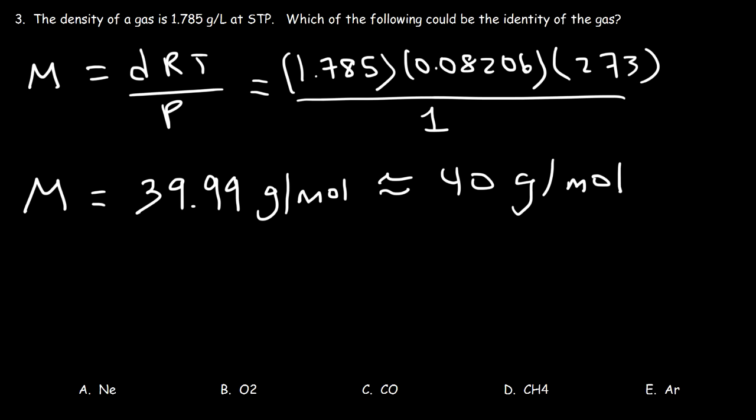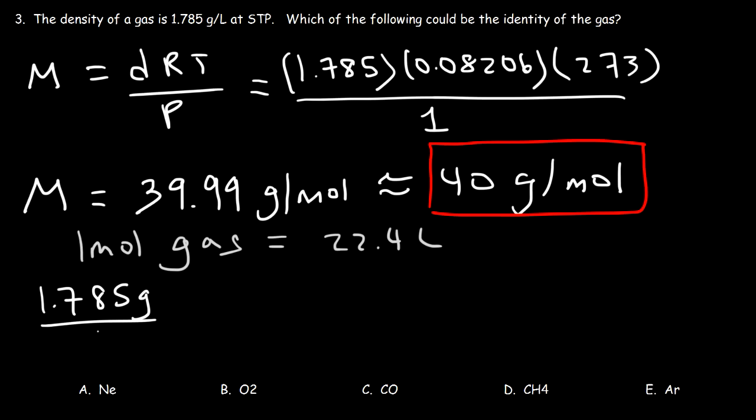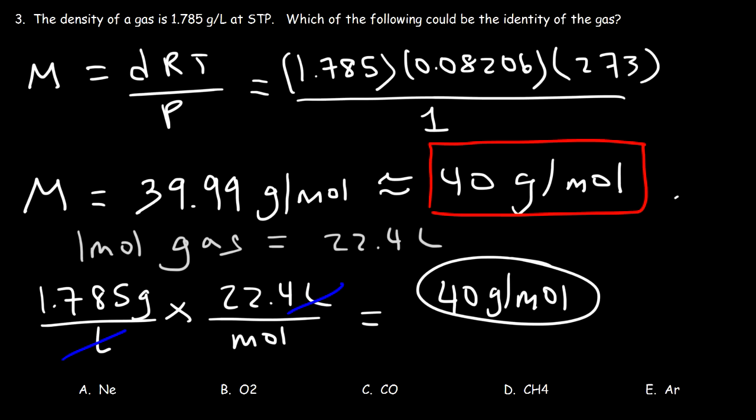Now the other way in which to get the same answer is to convert it. Keep in mind that at STP, one mole of gas occupies a volume of 22.4 liters. So starting with 1.785 grams per liter, we can then multiply it by 22.4 liters per mole. And notice how the unit liters cancel, and we're left with grams per mole, which is the unit for the molar mass of a gas. So it's simply 1.785 times 22.4, and this gives you about 40 grams per mole. So the second method is a lot easier than the first.